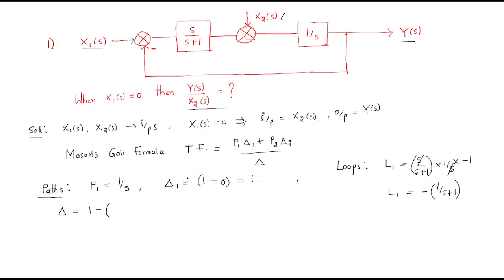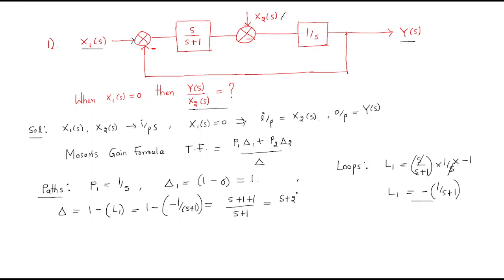There is no other loop, so we substitute directly. Δ = 1 minus L1 = 1 minus (-1/(s+1)) = 1 + 1/(s+1), which gives us (s+2)/(s+1).